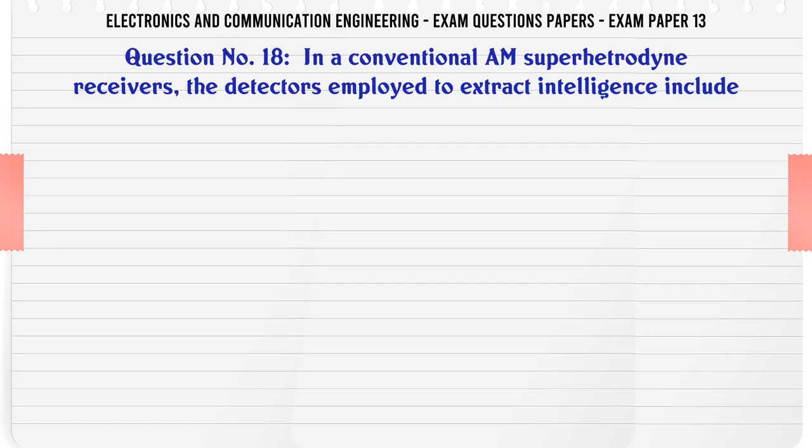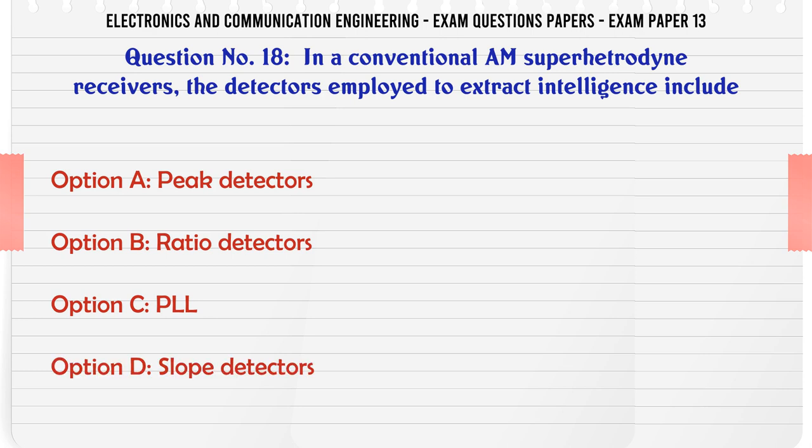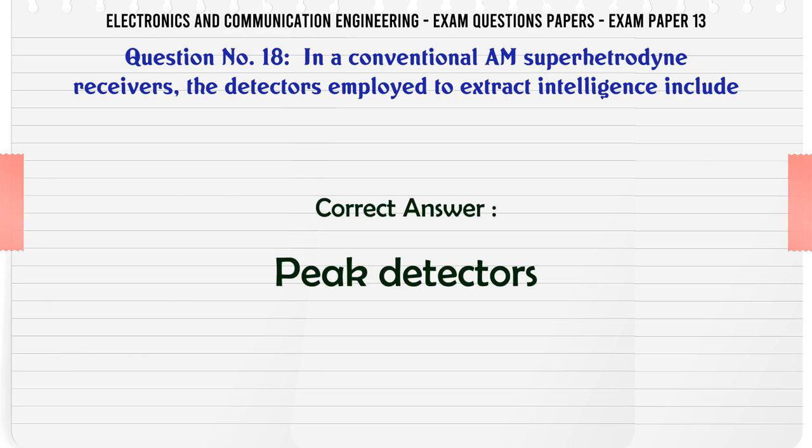In a conventional AM superheterodyne receiver, the detectors employed to extract intelligence include: A: peak detectors, B: ratio detectors, C: PLL, D: slope detectors. The correct answer is peak detectors.